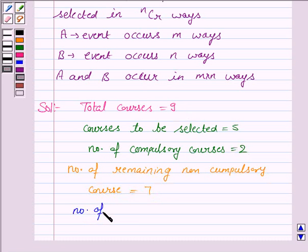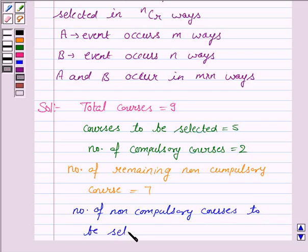Number of non-compulsory courses to be selected is equal to 5 minus 2, that is 3.